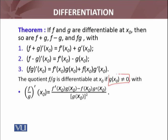The fourth one is the quotient f/g is differentiable at x₀. Whenever we divide, we have this condition: g(x₀) ≠ 0. And the quotient's derivative is defined as: [f'(x₀)g(x₀) - f(x₀)g'(x₀)]/[g(x₀)]². Derivative of the numerator function times denominator function as it is, minus numerator function as it is times the derivative of the denominator, all over the square of the denominator function evaluated at x₀.